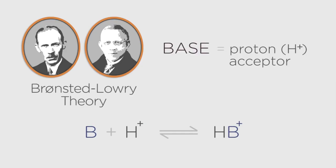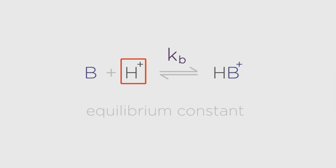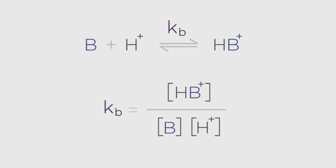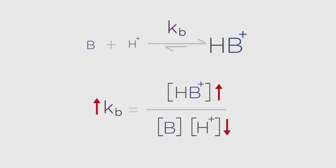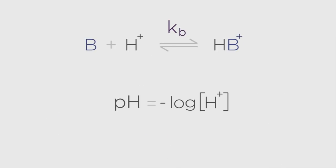Notice that all of these equations are equilibria. Kb is the equilibrium constant for the base reaction and describes the extent of H+ uptake by the base B. Kb is equal to the concentration of HB+ over the concentration of B times the concentration of H+. The higher Kb, the greater the extent of H+ uptake, so the stronger the base.